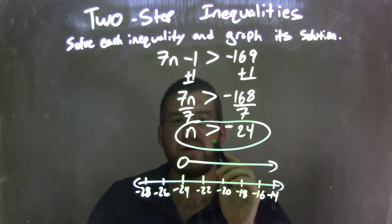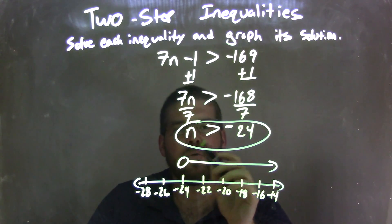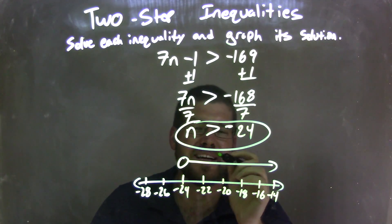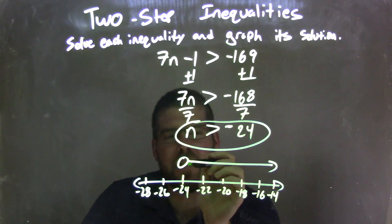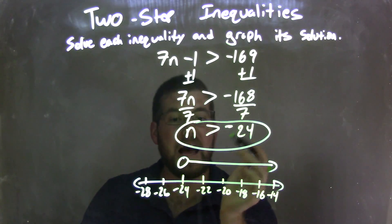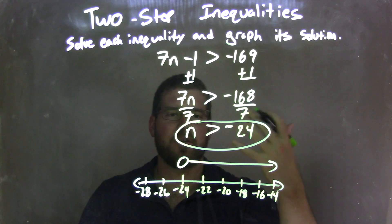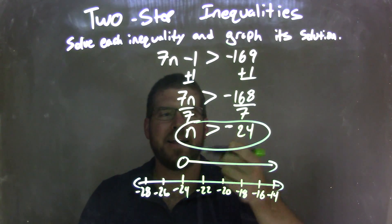From there, I needed to graph that. So I have an open circle at negative 24 because it's not equal to negative 24, it's just greater than. And then my arrow goes to the right, because n is greater than that negative 24. And there we have it. We have our graph here that matches our final answer, n is greater than negative 24.